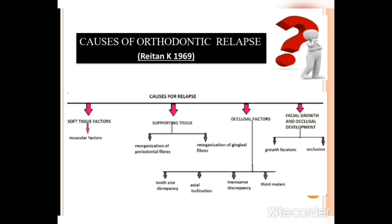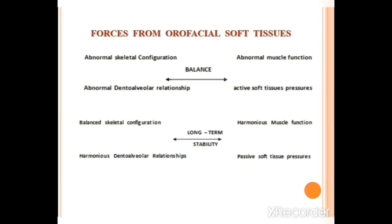Let's see what are the causes of relapse. Relapse basically compromises the post-treatment stability, and there are several destabilizing factors which lead to relapse. Rayton categorized these destabilizing factors into four: soft tissue factors, supporting tissue factors, occlusal factors, and facial growth and occlusal development. The first one is soft tissue factors. As we discussed in the muscular school of thought, there should be a balance between the intraoral and extraoral musculatures surrounding the jaws and teeth. Any abnormal muscular function or active soft tissue pressures will result in an abnormal skeletal configuration as well as dentoalveolar relationship. For long-term stability, you should end up with a harmonious muscle function with passive soft tissue pressures.